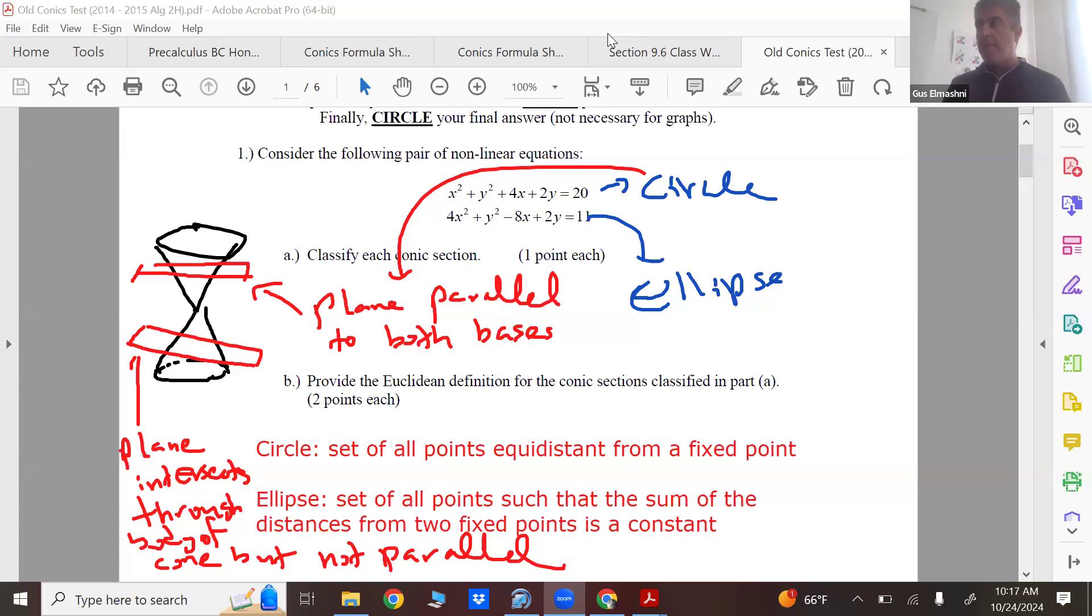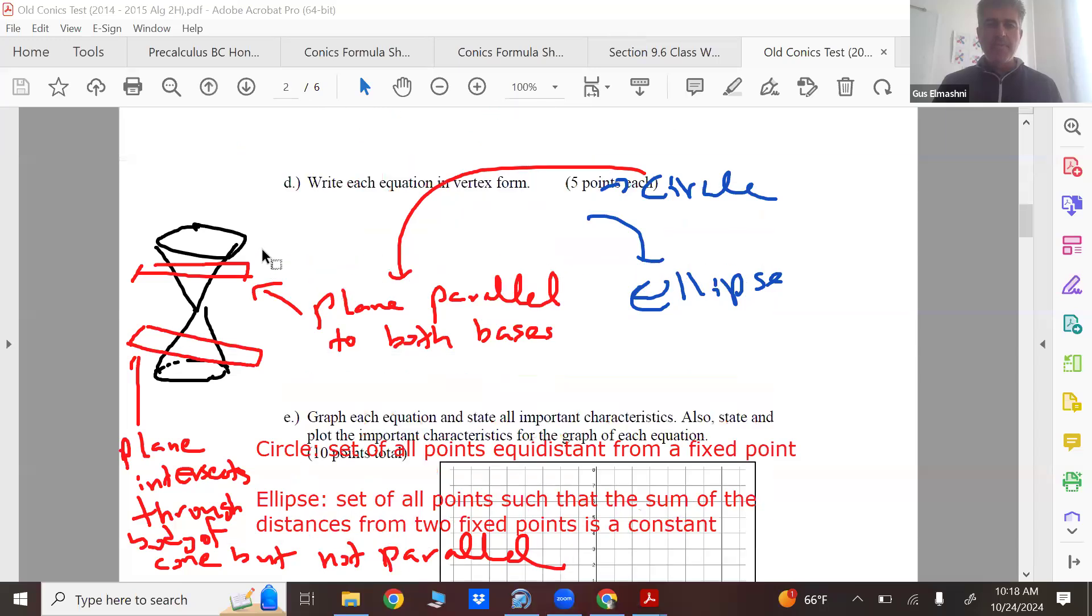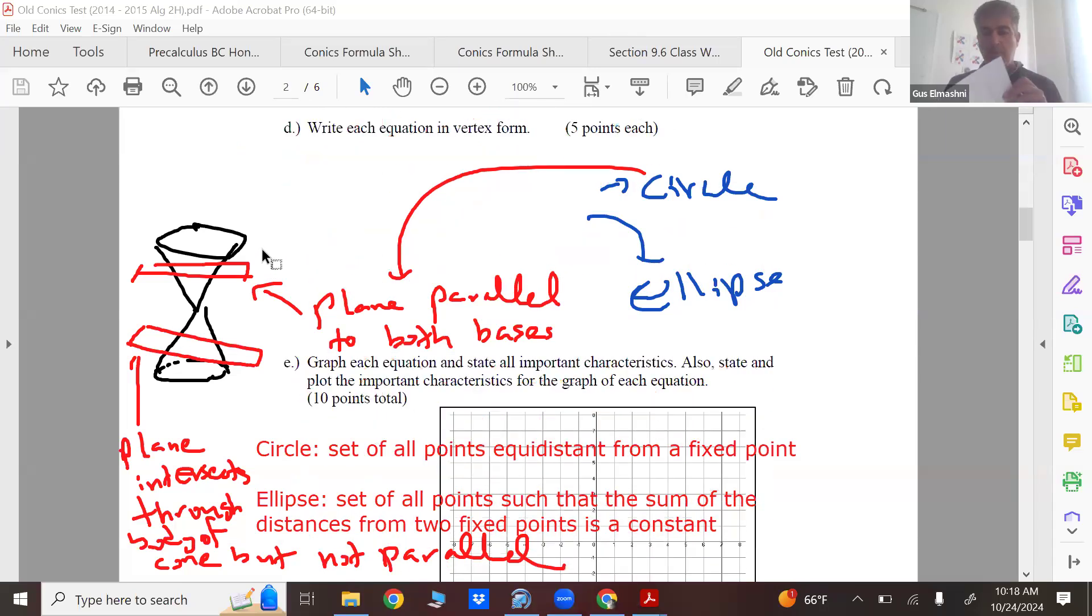Then that cross section will be a circle. If you do it at an angle through the body of the cone, that's not parallel, that would be an ellipse. The part I kind of care about the most is let's write the equation in vertex form.